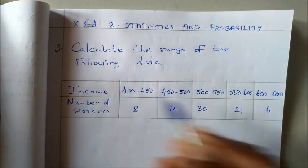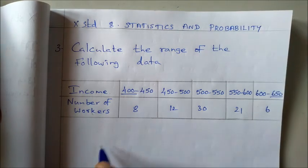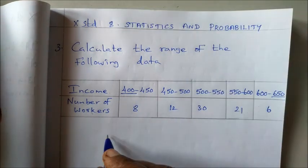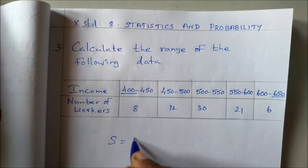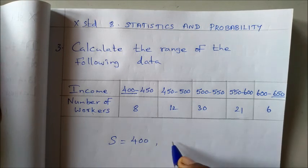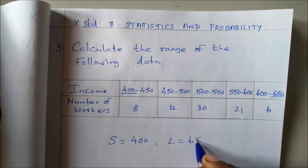This is lowest value and largest value. Smallest value and largest value. So smallest value S is equal to 400, and largest value L is equal to 650.